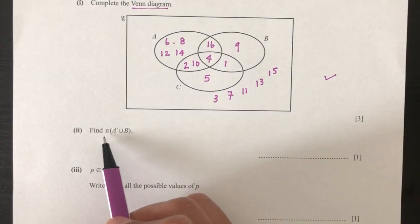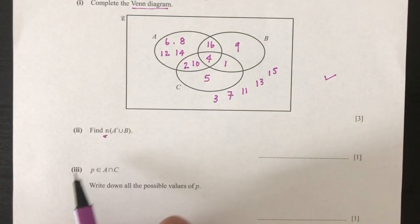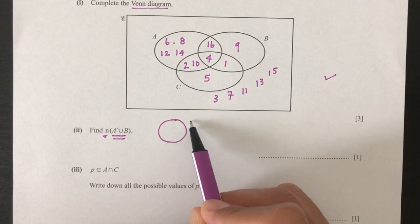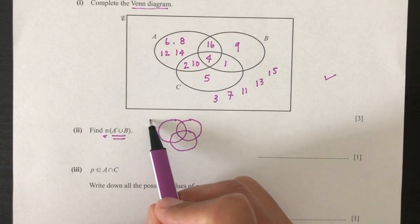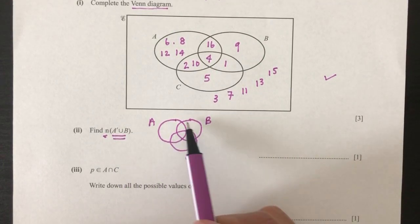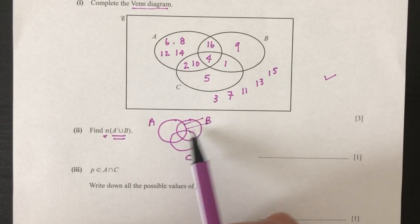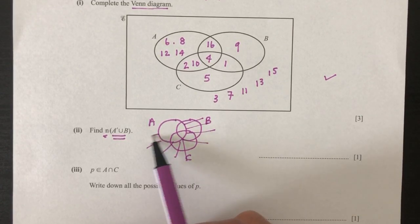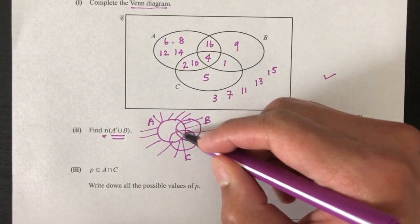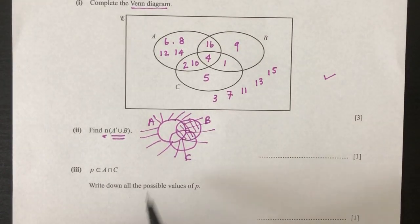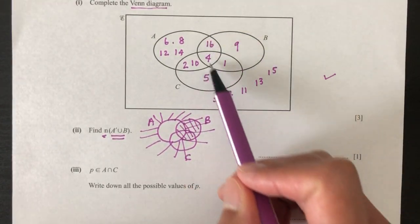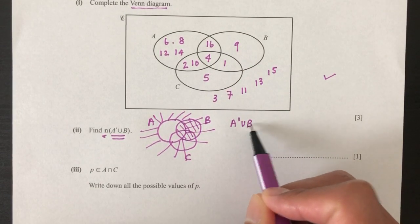So it says find the number of elements of A prime union B. So what is this set? So if you want to draw A, let's say A, we have A, B, and C. So what is A prime? A prime is everything outside, everything outside of A. Now we have to union B. Where is B? B is this one. So basically we have to find all the values outside of A plus the values of B.